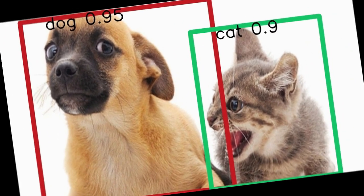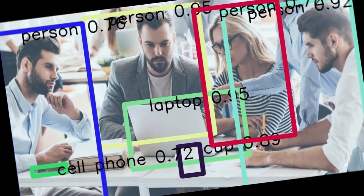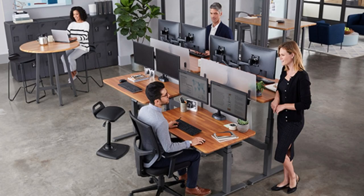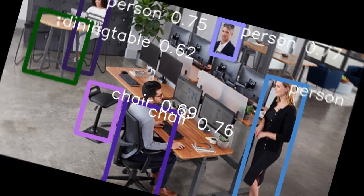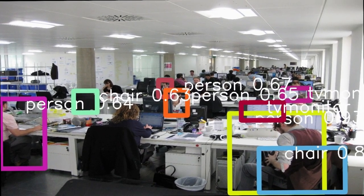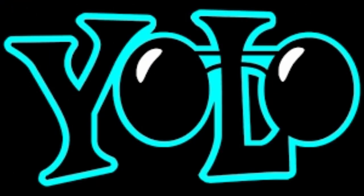If you are new to my channel, don't forget to press the subscribe button because I am going to come up with multiple object detection videos in future, where we will discuss custom object detection with Faster R-CNN and the TensorFlow platform. This video is all about YOLO V3, which is developed on darknet. So without waiting, let's start.